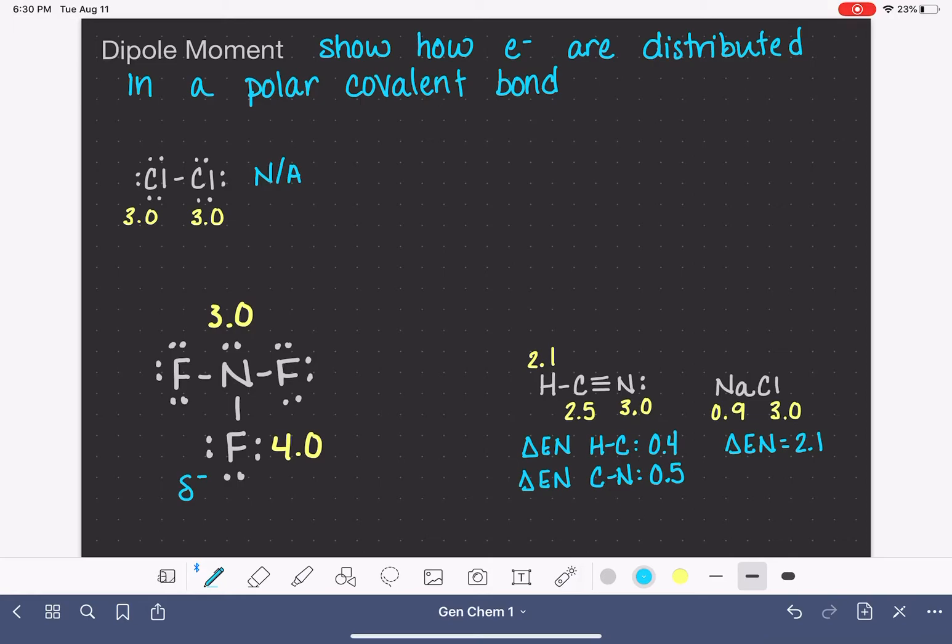We're going to use the same type of notation on the nitrogen atom to show that atom has a buildup of a little bit of positive charge because its electrons are being pulled away from it. We pronounce these symbols partial negative and partial positive.